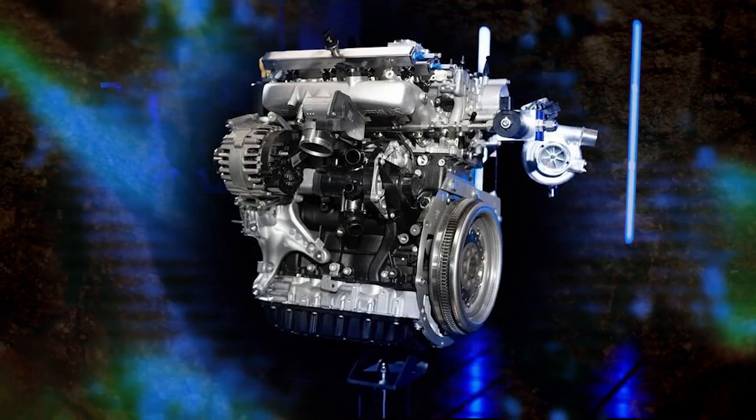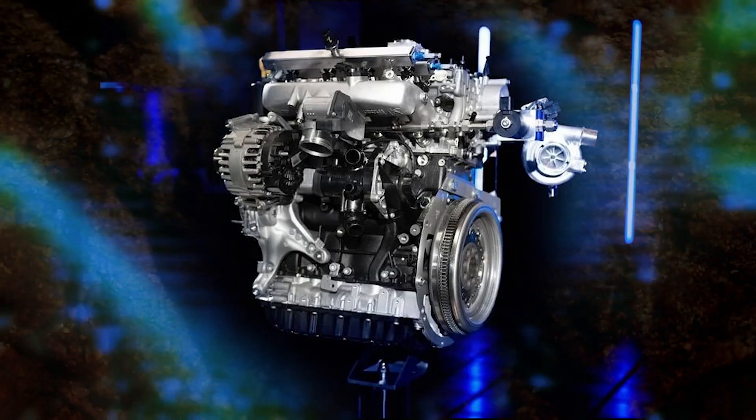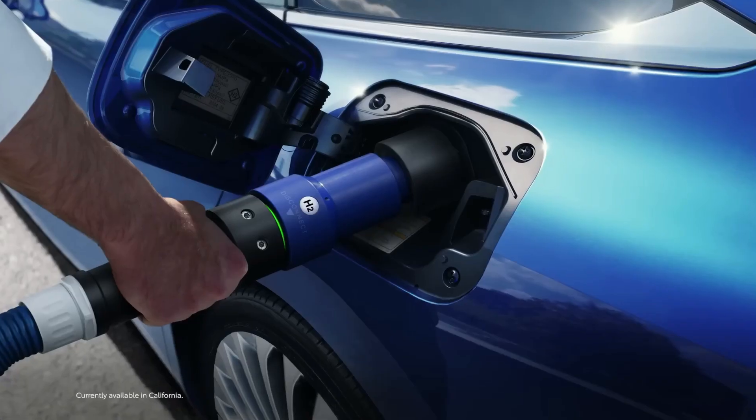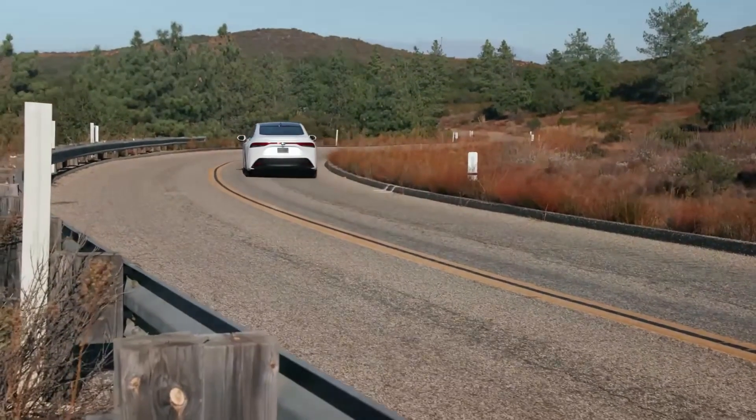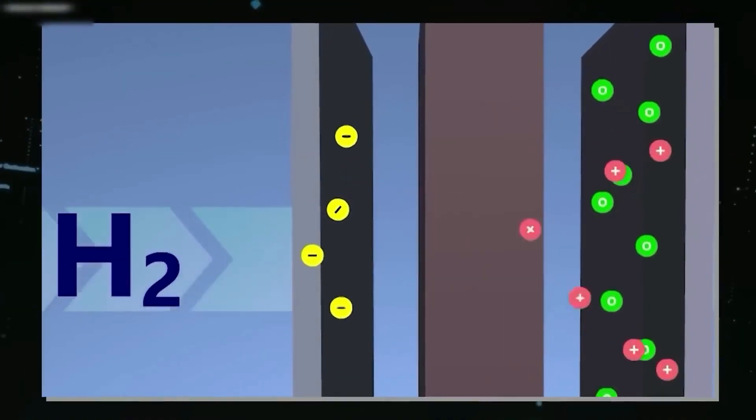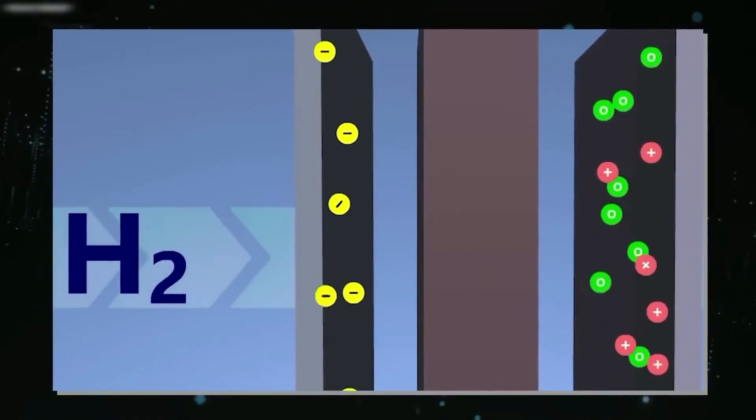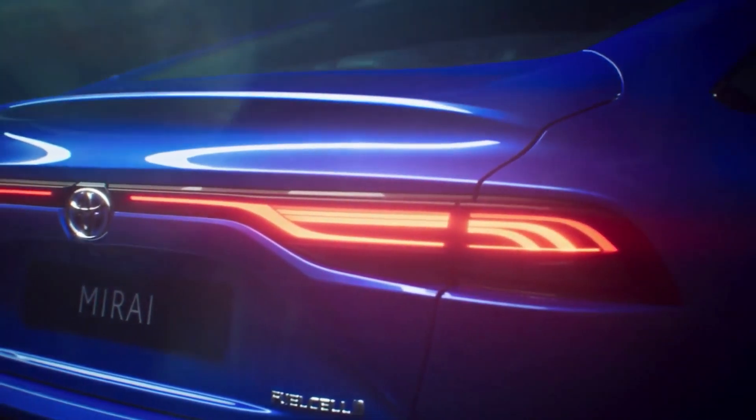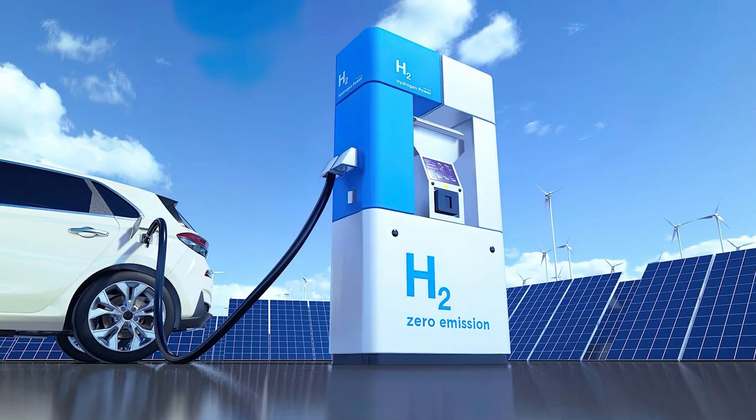Many wonder, why not skip the hydrogen and run directly on water? The simple answer is that water alone doesn't contain energy we can harness directly for cars. Water can be split into hydrogen and oxygen through a process called electrolysis, but that requires power. The real magic is in using hydrogen gas as a fuel source, which packs a lot of energy.